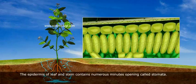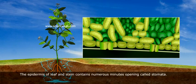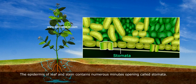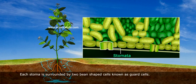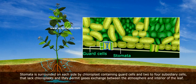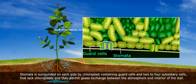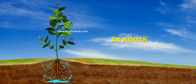The epidermis of leaf and stem contains numerous minute openings called stomata. Each stoma is surrounded by two bean-shaped cells known as guard cells. Stomata are surrounded on each side by chloroplast-containing guard cells and two to four subsidiary cells that lack chloroplasts, and they permit gas exchange between the atmosphere and the interior of the leaf.